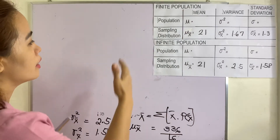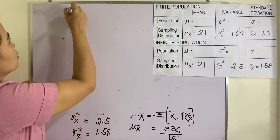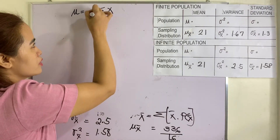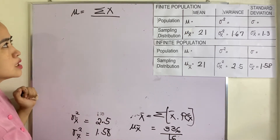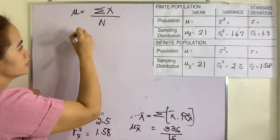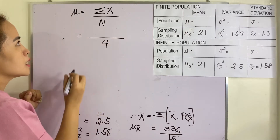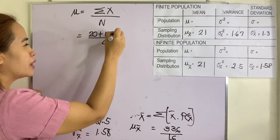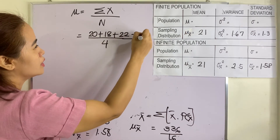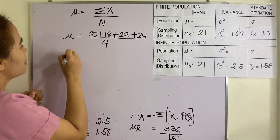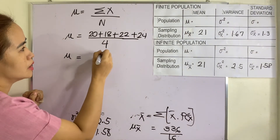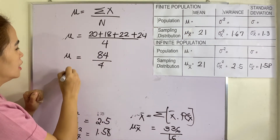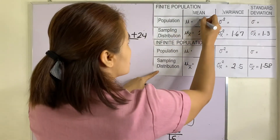Let us now recall the formula for population mean from our previous lesson: mu is equal to the summation of x divided by N. Our N here is 4, and the data are 20, 18, 22, and 24. So our population mean is 84 divided by 4, which equals 21.